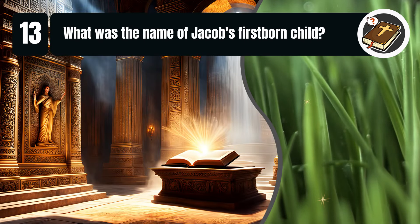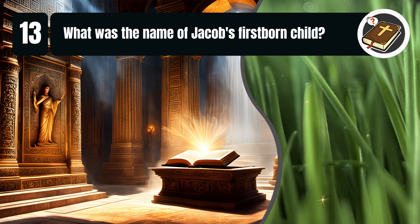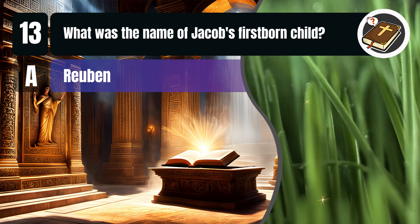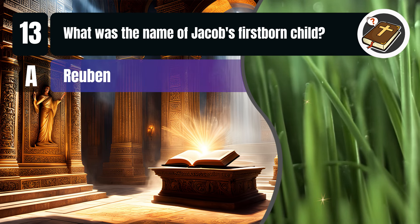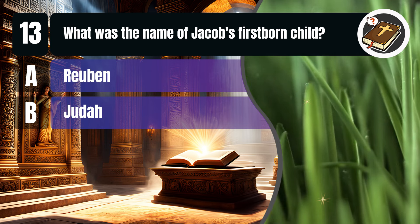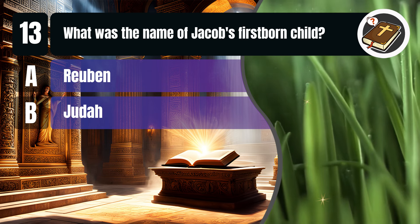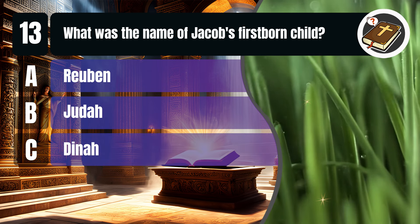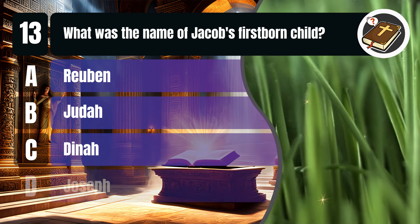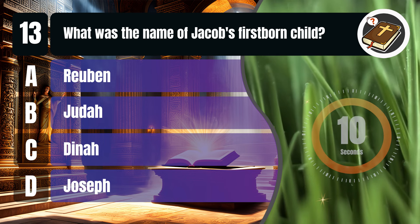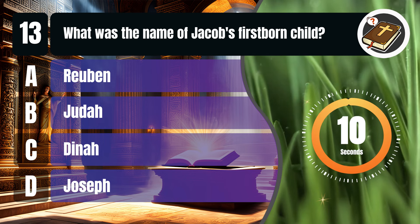Question 13. What was the name of Jacob's firstborn child? A. Reuben. B. Judah. C. Dinah. D. Joseph. You get 10 seconds.